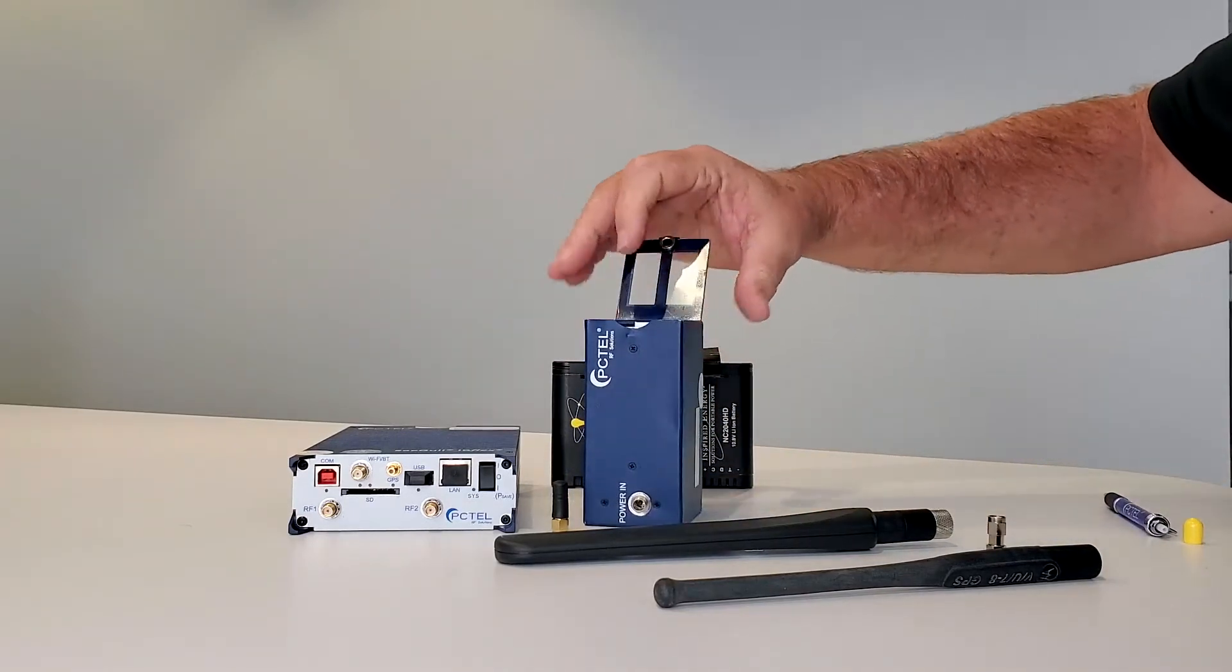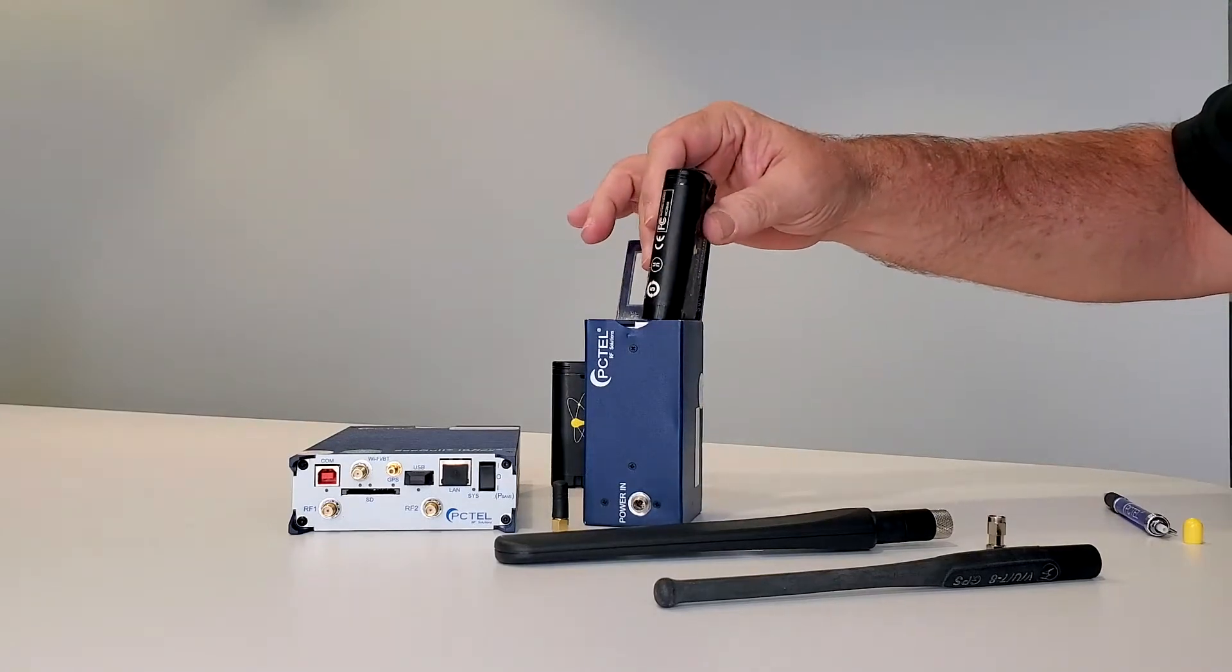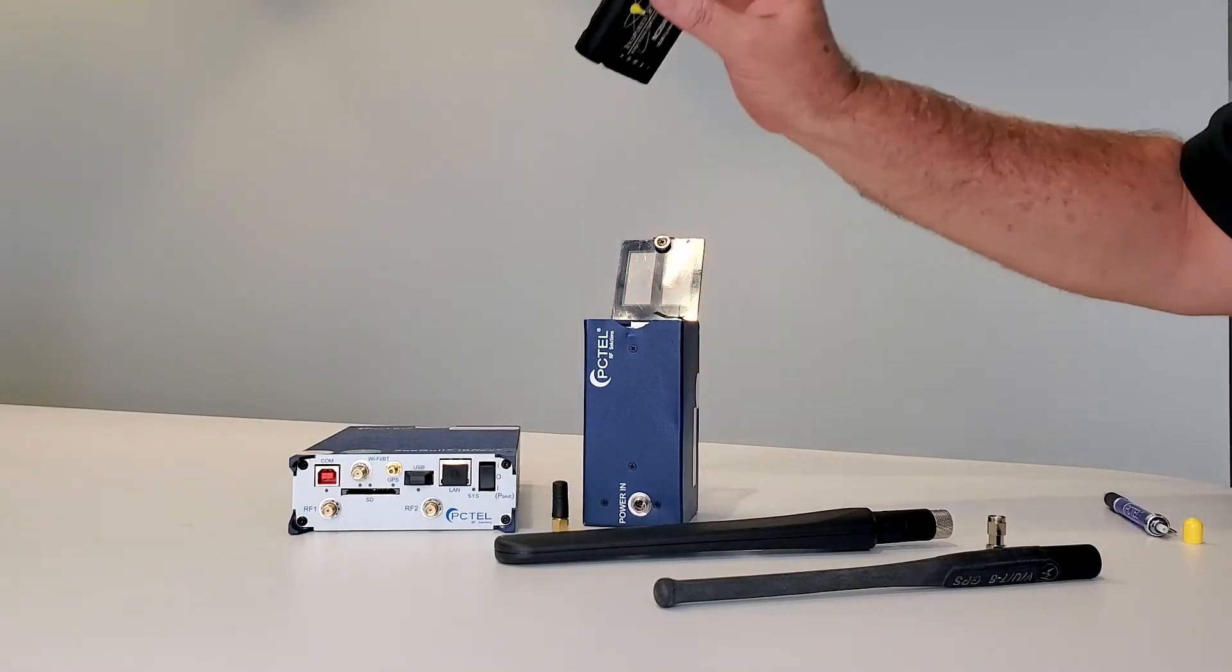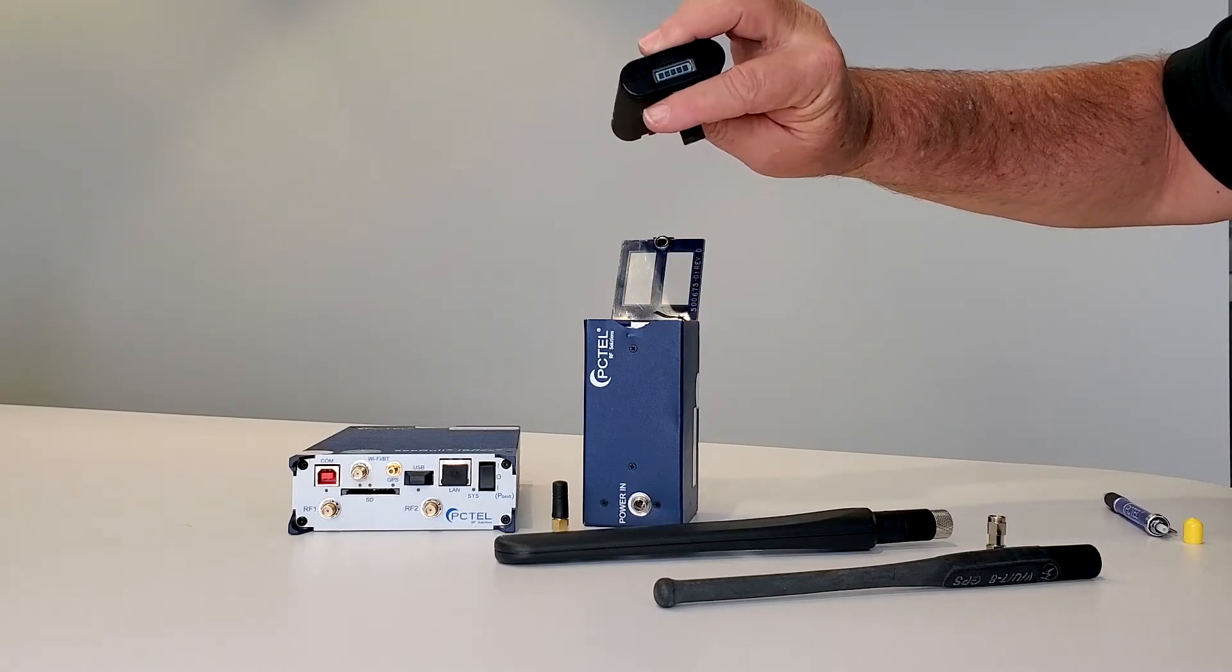We're going to open up the battery box. These batteries will only go in one way, and each battery has its own LCD screen to show the power level.